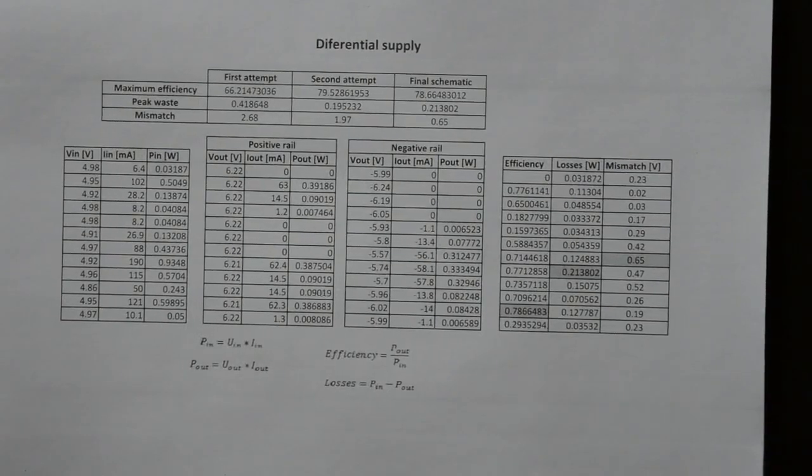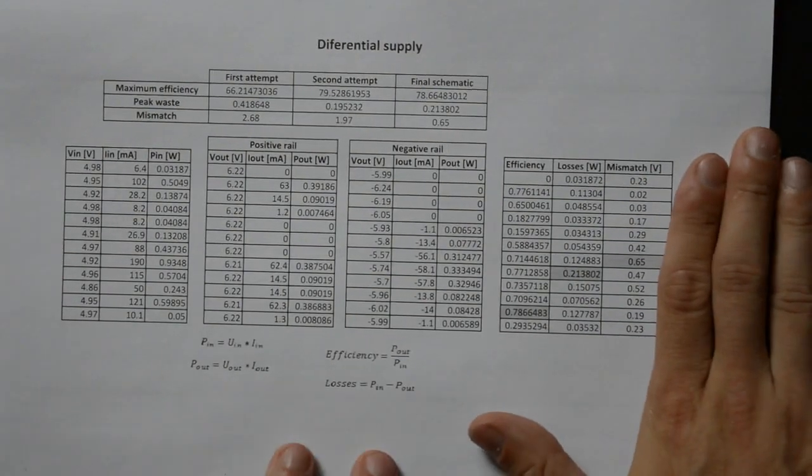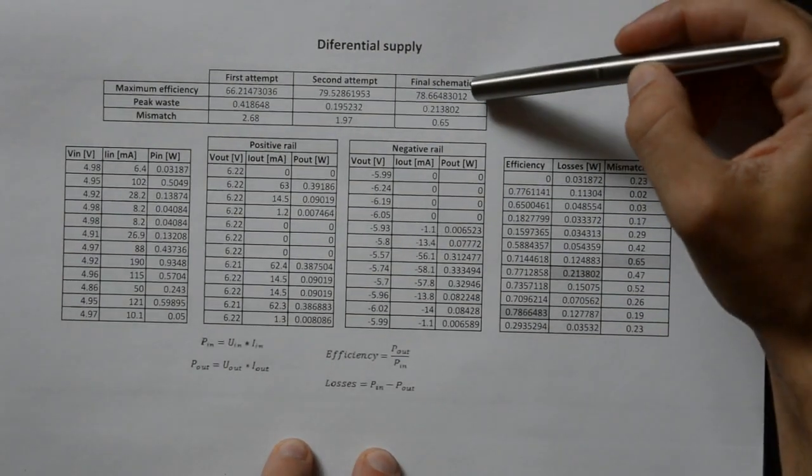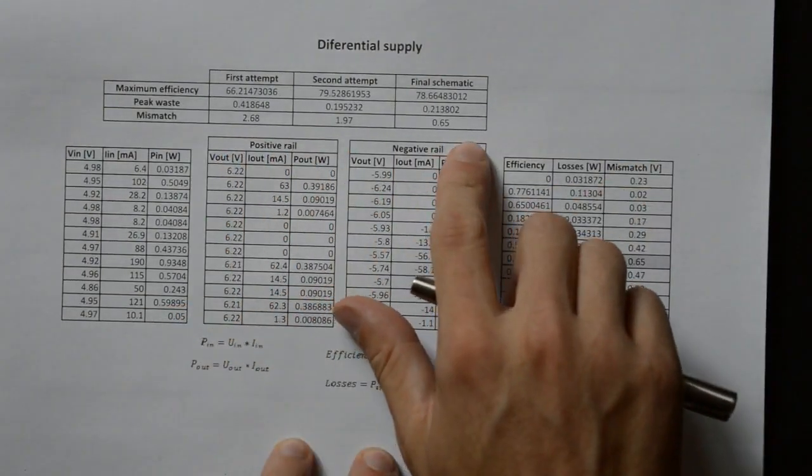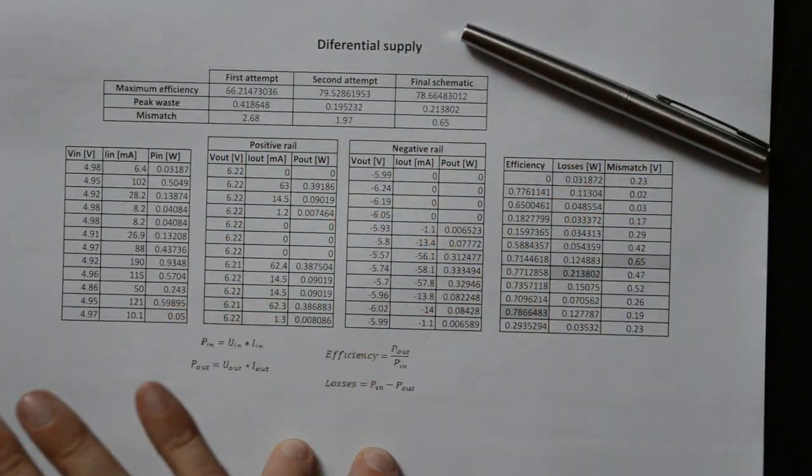So, after a bit of testing, these are the final results. Efficiency dropped a bit, as expected, but this time I have quite an acceptable channel mismatch. This power supply is finally usable in some actual circuits. I call this a win.